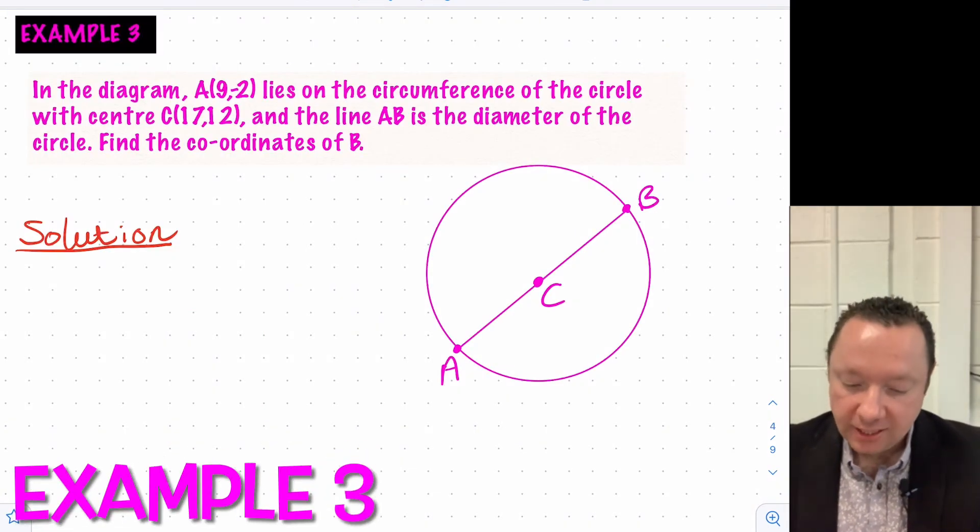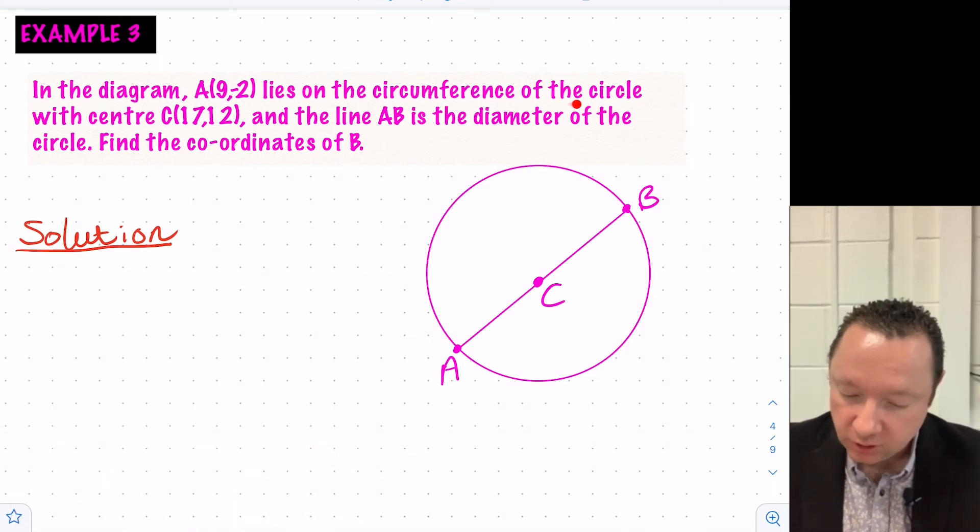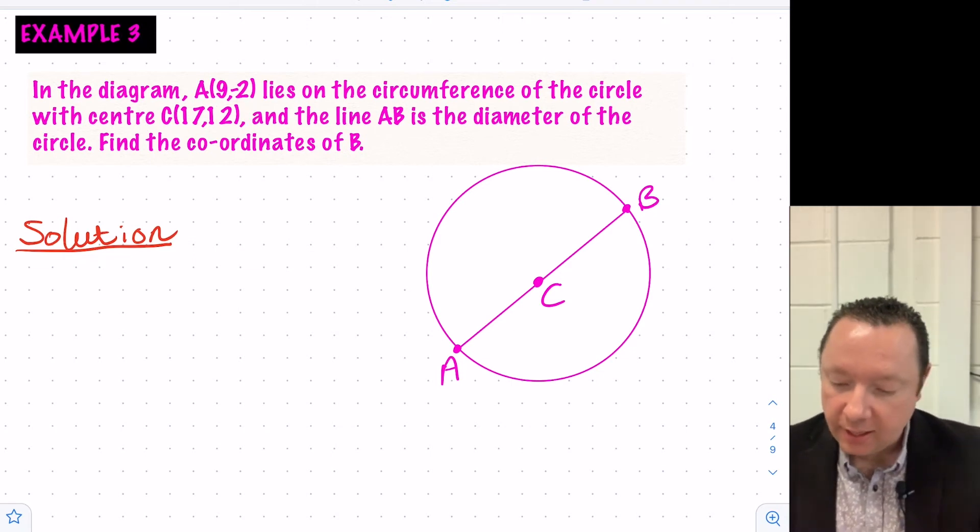Example 3 says, in the diagram, A, 9 minus 2 lies on the circumference of the circle, with centre C, 17, 12. And the line AB is the diameter of the circle, find the coordinates of B. So a little bit, kind of working backwards here, I know this point, I know the middle, and I'm trying to find this point on the outside.